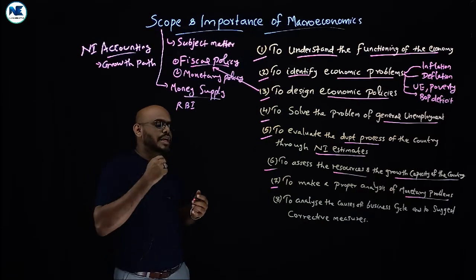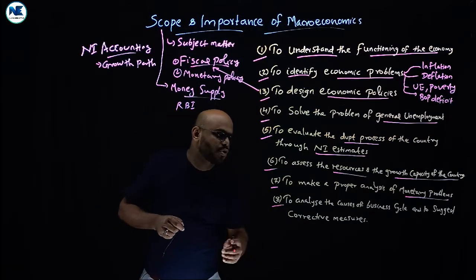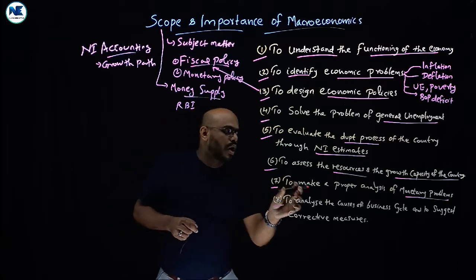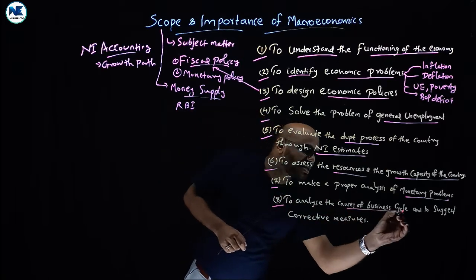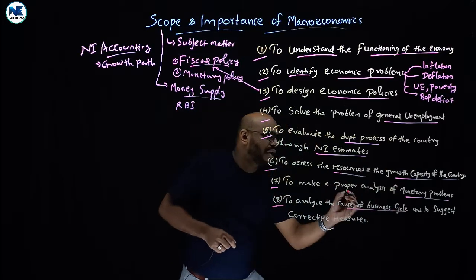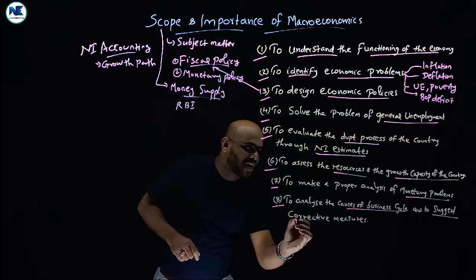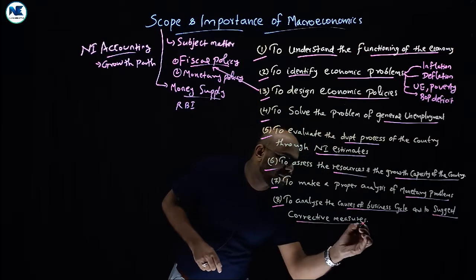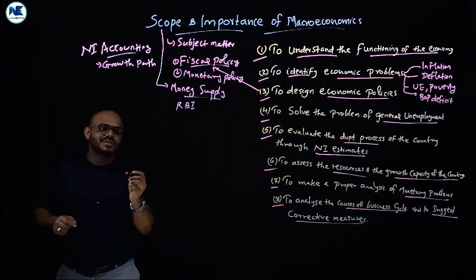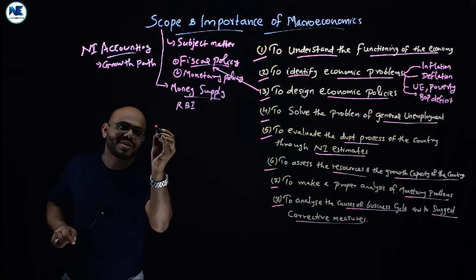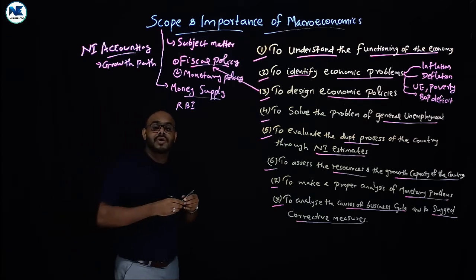The eighth point is to analyze the causes of the business cycle and to suggest corrective measures. The business cycle — also called the trade cycle — represents the ups and downs in economic activity over time.